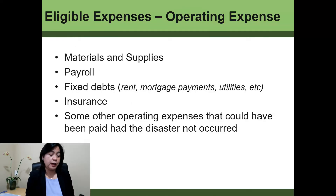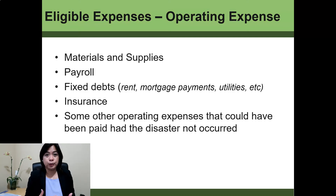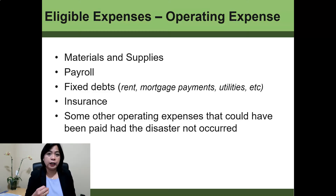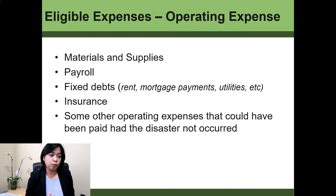So what are those eligible expenses? Those are your working capital operating expenses. Working capital normally includes the materials and supplies that you need to purchase and use to generate revenue. Or if you're a service or professional company, then your working capital will be more focused on paying those employees. So that could be materials and supplies, payroll, fixed debts that you need to pay every month like rent, commercial mortgage payments, utilities, insurance, and some other operating expenses that could have been paid had the disaster not occurred.